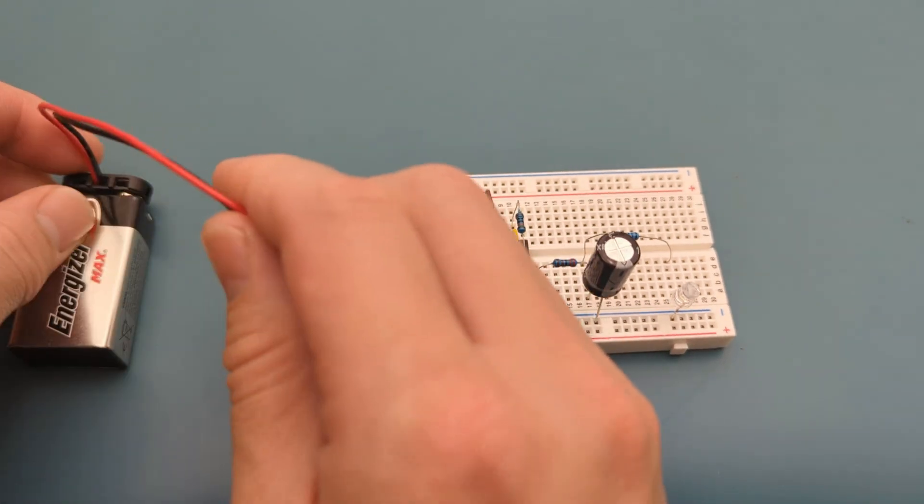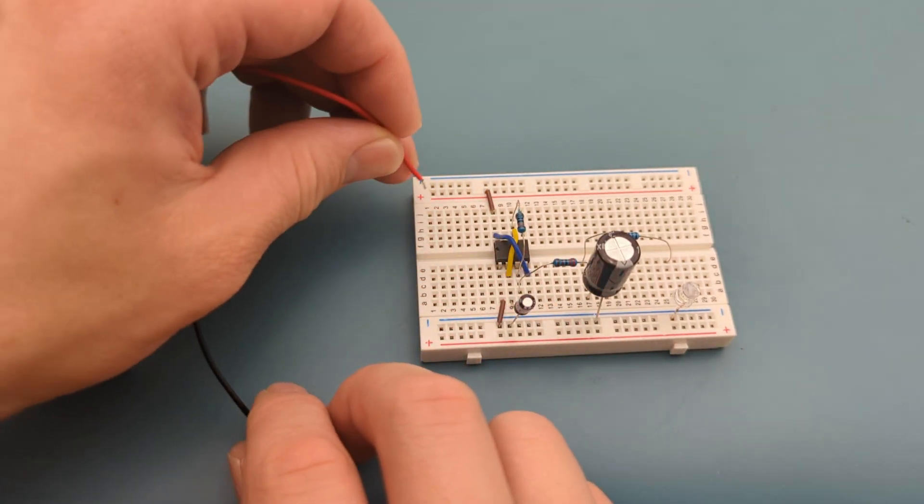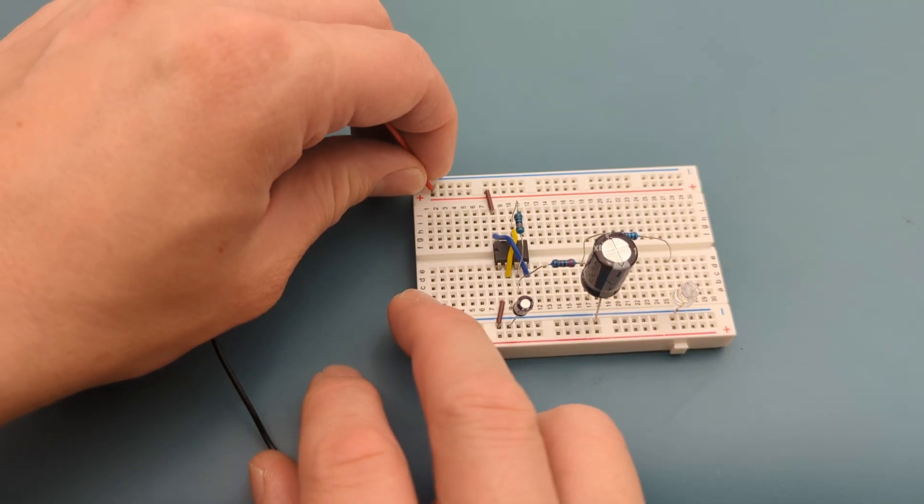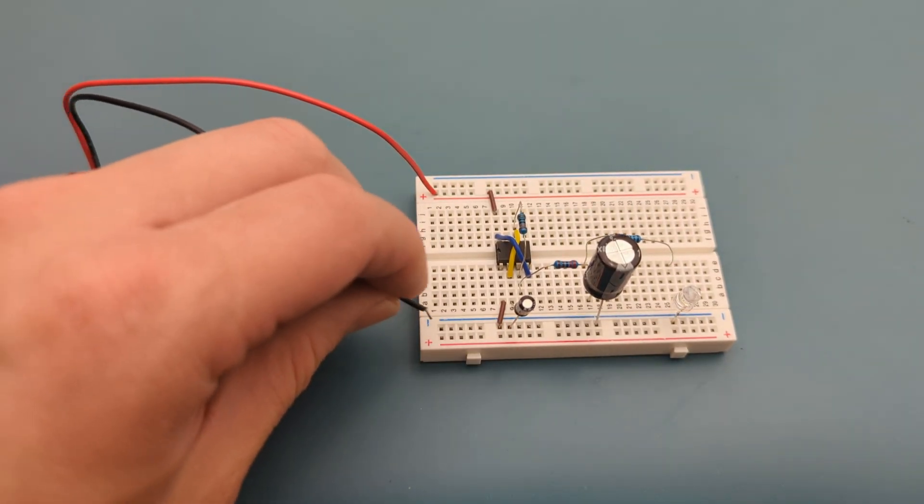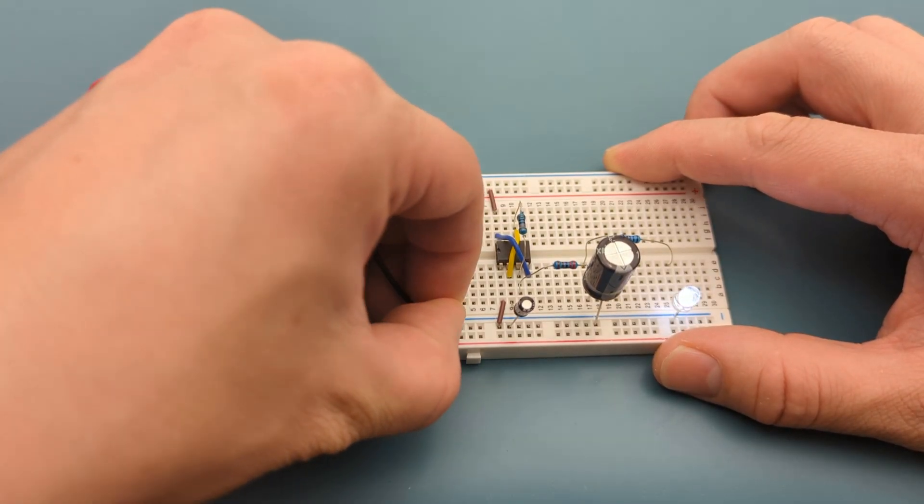It's time to connect the power supply. Connect the positive lead of the battery holder to the positive rail. Connect the negative lead of the battery holder to the negative rail. We have successfully completed the circuit.